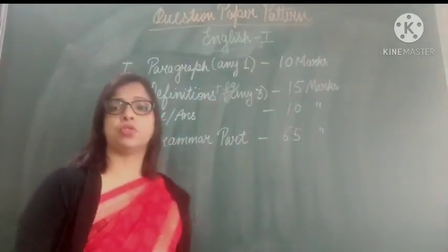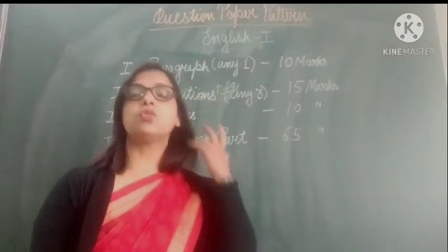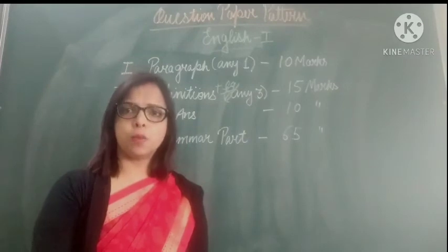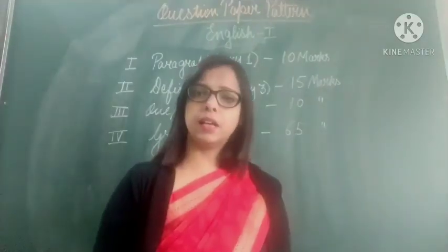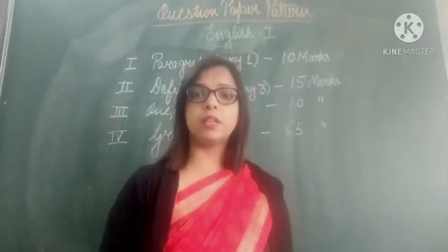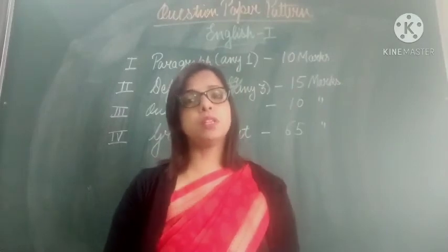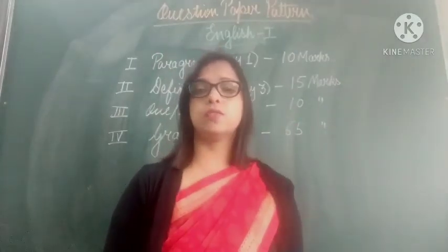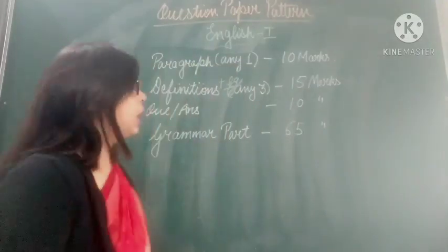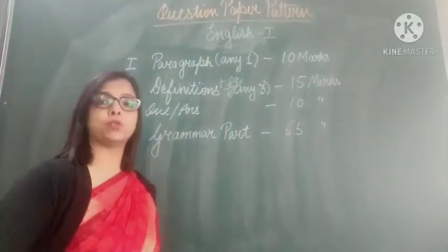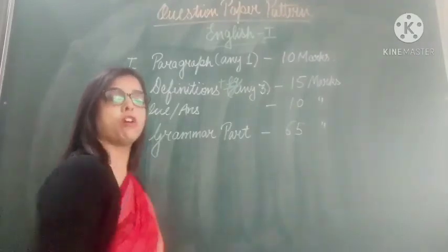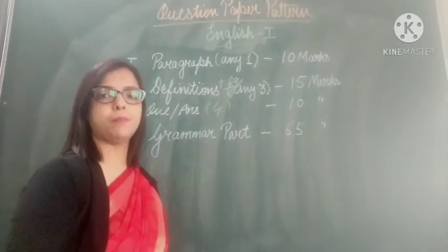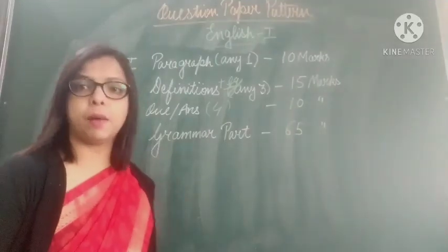Then question answers. You have got two stories in your English 1 — one is 'Topsy Turvy Land' and the other is 'A Tail, Not a Tail'. You have to learn all the question answers given in those two chapters. From there you will get question answers — maybe 4 or 5 questions will come — and that will be of 10 marks.